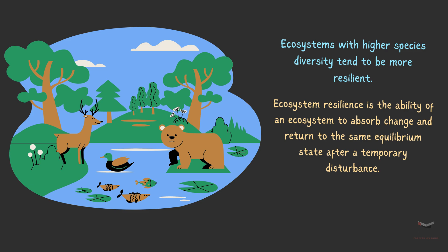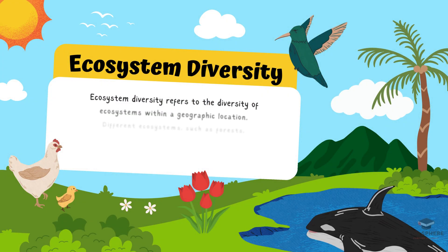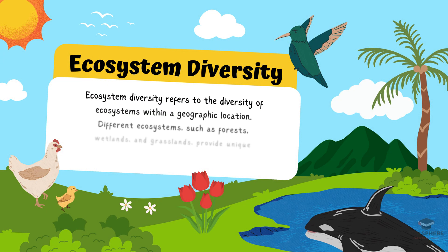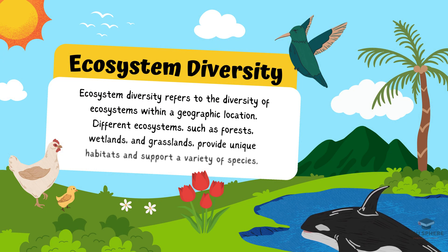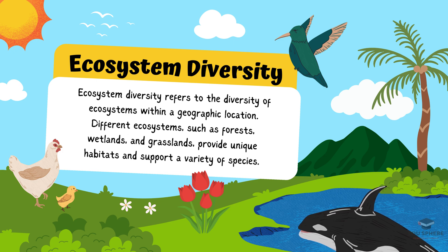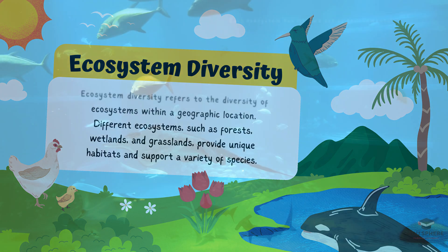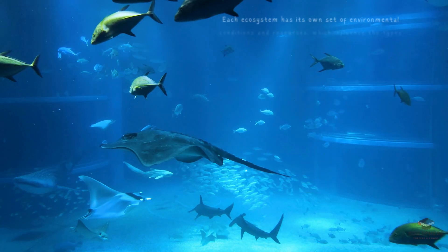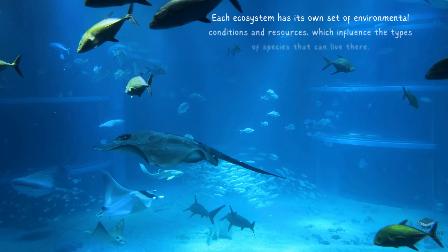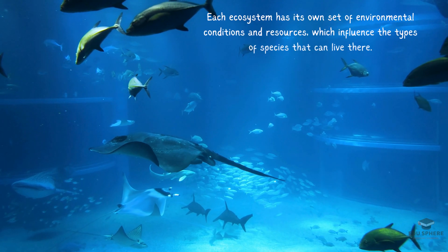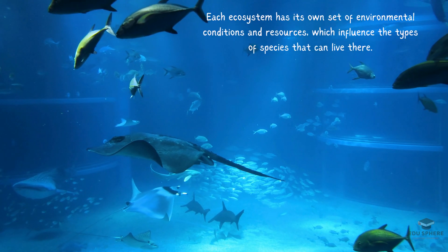Finally, we have ecosystem diversity. Ecosystem diversity refers to the variety of ecosystems within a geographic location. Different ecosystems, such as forests, wetlands, and grasslands, provide unique habitats and support a variety of species. Each ecosystem has its own set of environmental conditions and resources, which influence the types of species that can live there.